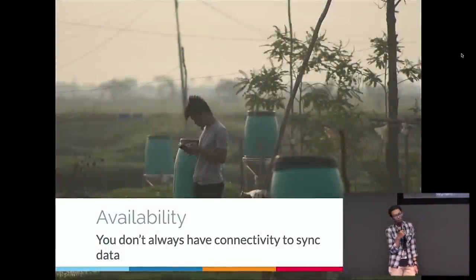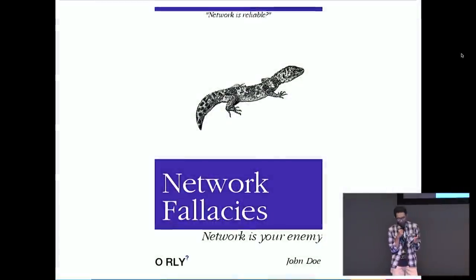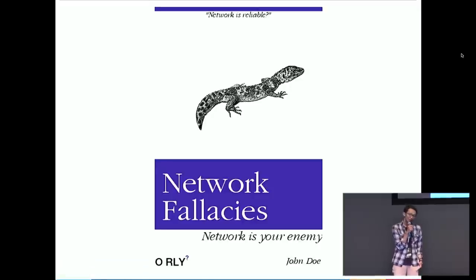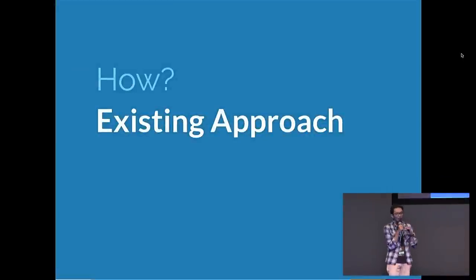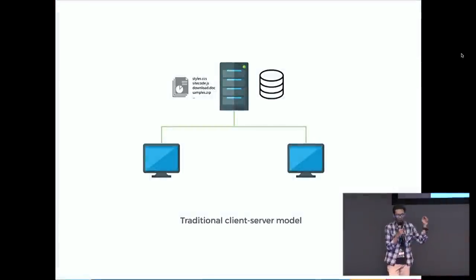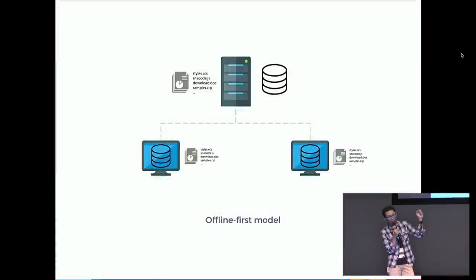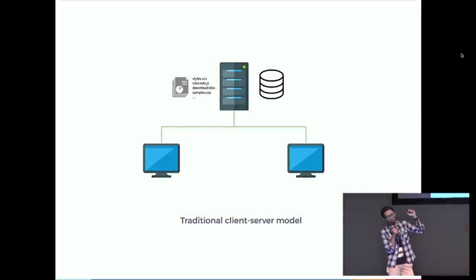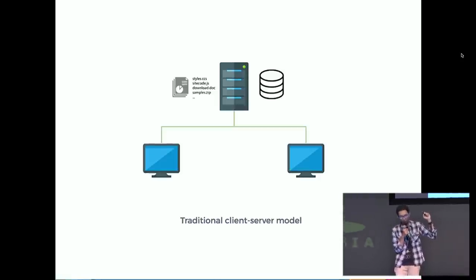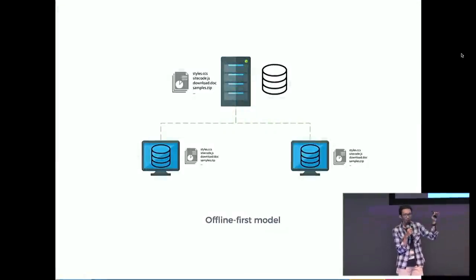Next: availability — you won't always have connectivity to sync your data. We have to remember this from distributed systems network fallacies: the network is never reliable. If you think the network is reliable, you've fallen into one of the fallacies of distributed systems. So I've shown you the problem. Now, here's the initial cost and how today's technology approaches this problem. You know the traditional client-server model, and this is the offline-first model. With the traditional model, you really have to access the cloud to get the page. But in the offline-first model, the data and access should all be on the client side.